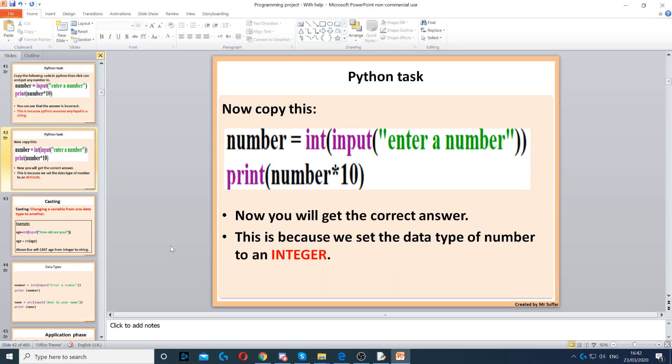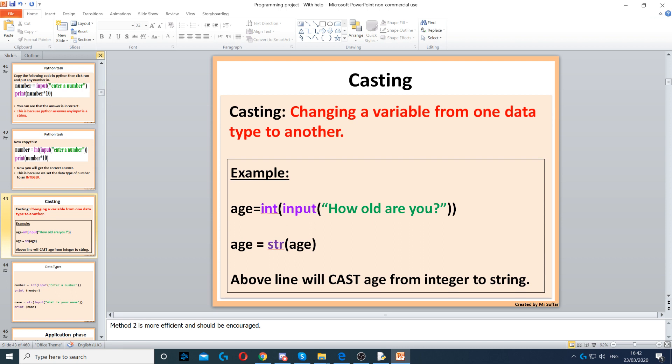We also have casting. So casting is a definition that you need to understand. Casting is when you're changing a variable from one data type to another. For example, in this code here we have age. First we set age to an integer, so we casted age into an integer. Then we casted age into a string. So this is casting - this is when you're changing the data type from one to another.